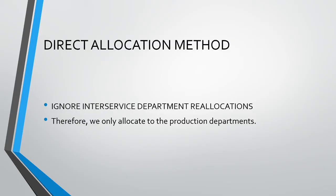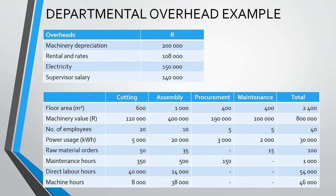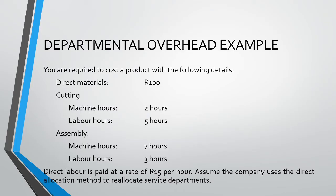Let us have a look at how this works using our example — the same example as our previous video, so we can easily compare how the methods work. Our first table provides us with overhead costs for the factory in total, while the second table provides basic information about each department, which we used to allocate overhead costs to departments. Notice that the required now specifies that the company uses the direct allocation method to reallocate service departments.